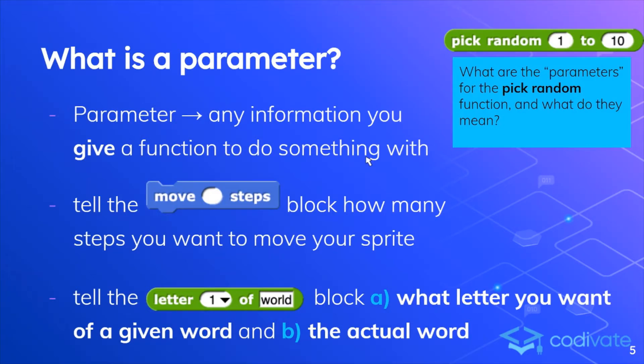So what is a parameter? A parameter is anything you give a function to do something with. You can tell a move something steps block how many steps you want to move your sprite. You can tell the letter 1 of word block what letter you want of a given word and the actual word.